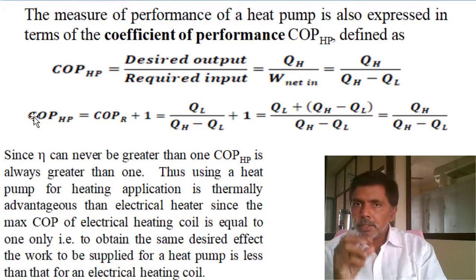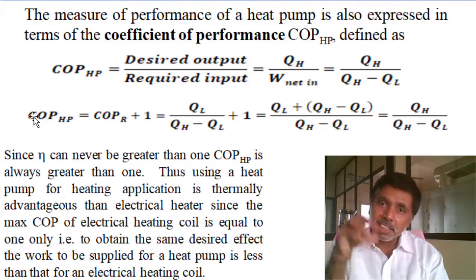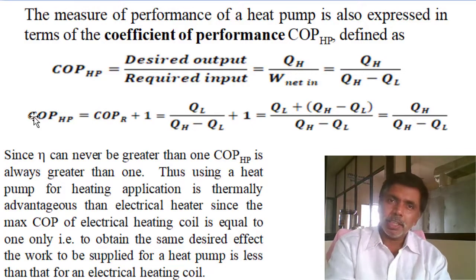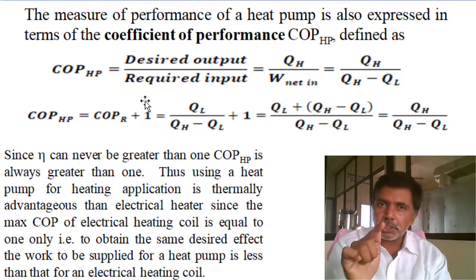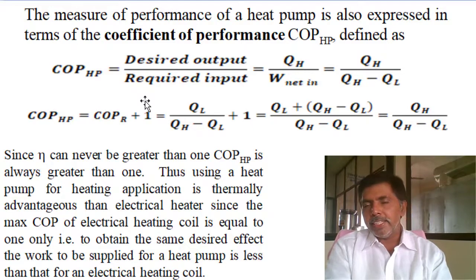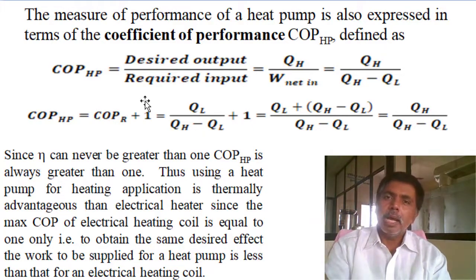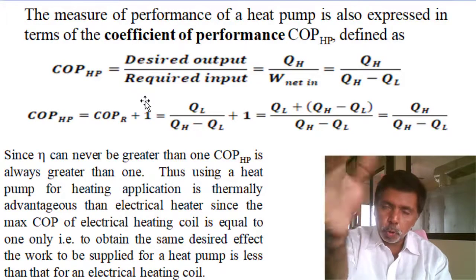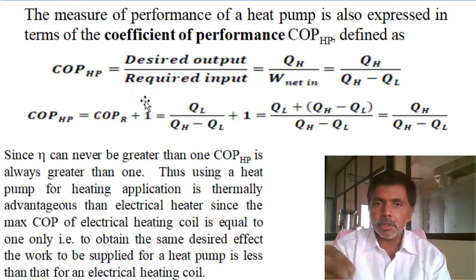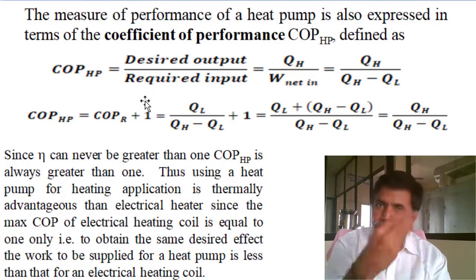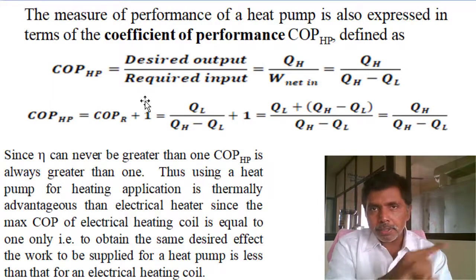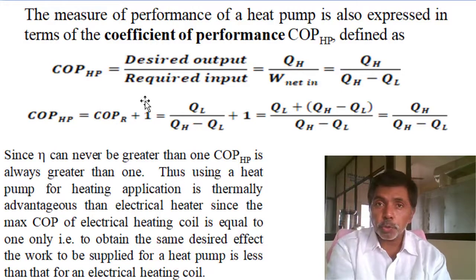The coefficient of performance of energy transfer devices is more than 100%. Universally, for any engine or energy conversion device, efficiency is less than 100%. But for energy transfer devices, the minimum efficiency is 100%. That is why energy transfer device performance is measured by coefficient of performance, not efficiency. The equation is the same — output by input — but the minimum COP achieved is 100%.